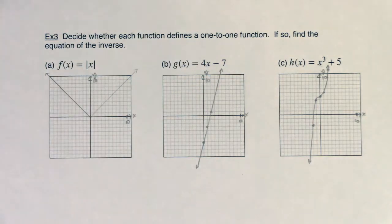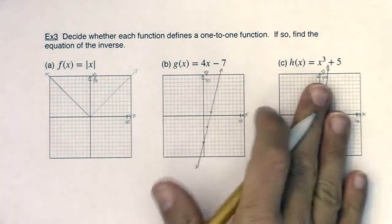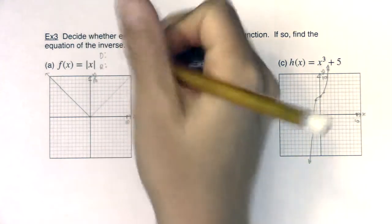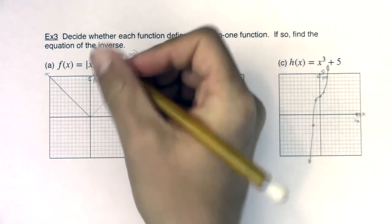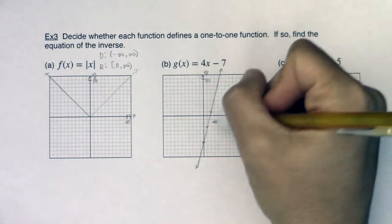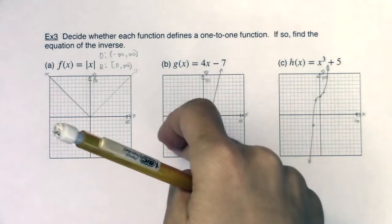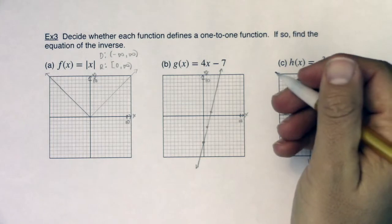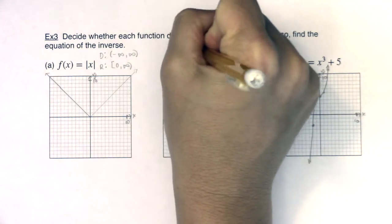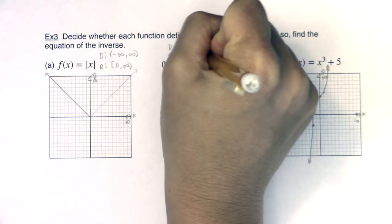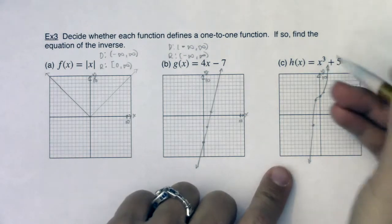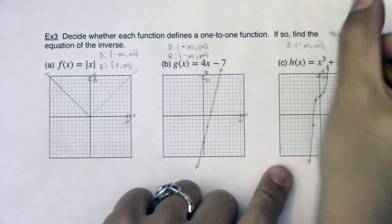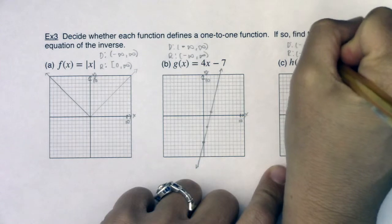Before I do any of that, it's good to do domain and range. For the absolute value, I can see the arrows go left forever to right forever, so domain is negative infinity to infinity. The lowest y value is 0 and it goes up forever. For the line, whenever you have a non-vertical or non-horizontal line, the domain and range are both all real numbers. For the cubic, I don't have a fraction, radical, or log, so my domain is all reals. My range: I'm going down forever to up forever, so all real numbers.